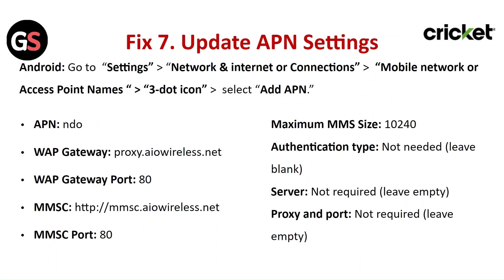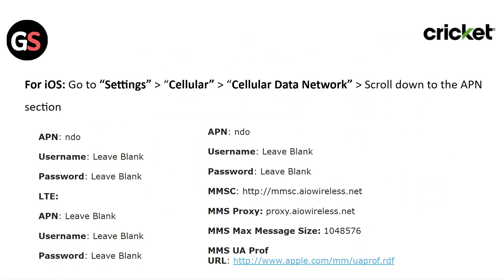Fix 7: Update the APN Settings. For Android, go to Settings, then Network and Internet Connections, then Mobile Network or Access Point Name. Tap the three dots icon, select Add APN, and enter the required details. For iOS, go to Settings, then Cellular, then Cellular Data Network. Scroll down to the APN section and enter the required details.